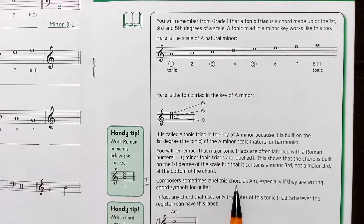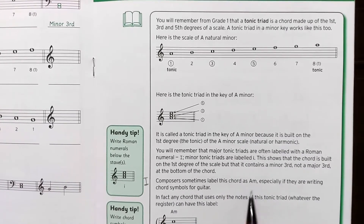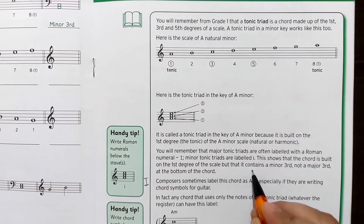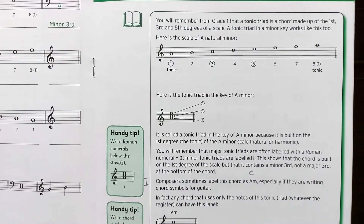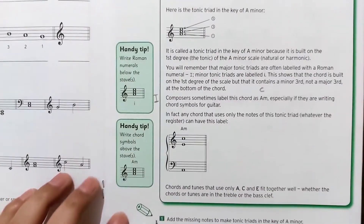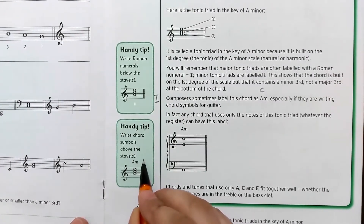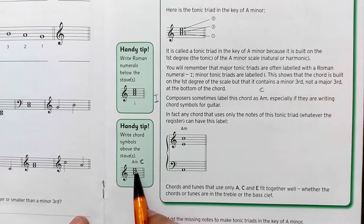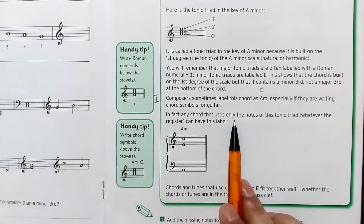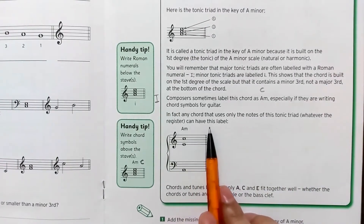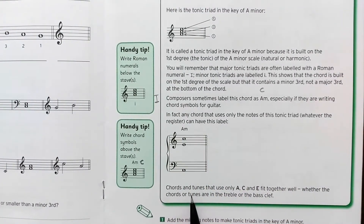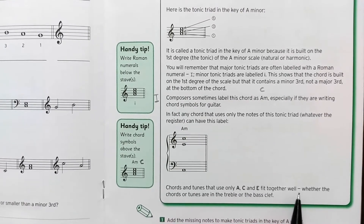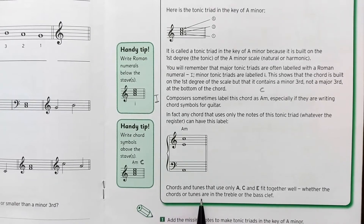Composers sometimes label this chord as 'Am', meaning A minor. For the major scale, if it was C major we would put 'C' on top of the chord. But for the minor tonic triad we write 'Am'. In fact, any chord that uses only the notes of this tonic triad can have this label. Chords and tones using only A, C, and E fit together well whether they are in the treble or the bass clef.